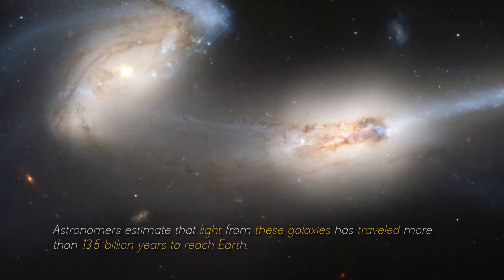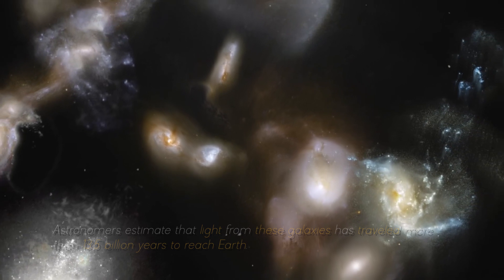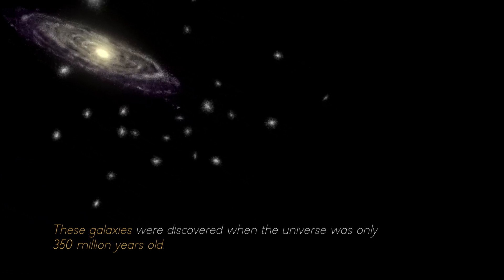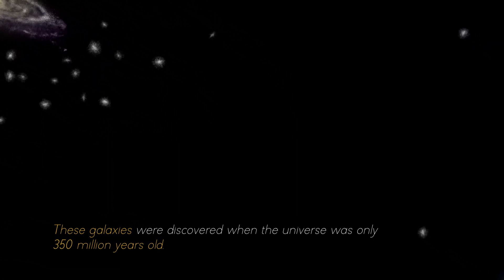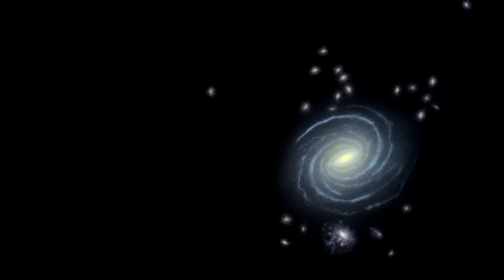Astronomers estimate that light from these galaxies has traveled more than 13.5 billion years to reach Earth, giving us a glimpse into the distant past of the universe. These galaxies were discovered when the universe was only 350 million years old, shedding light on how quickly the first generations of galaxies emerged.